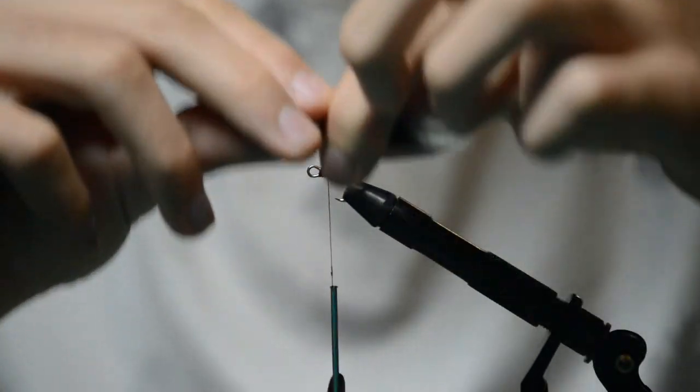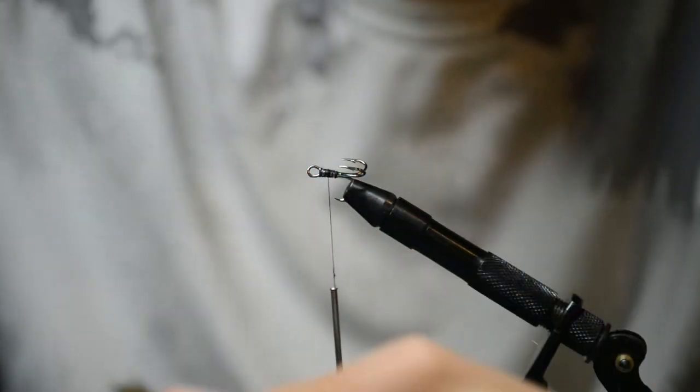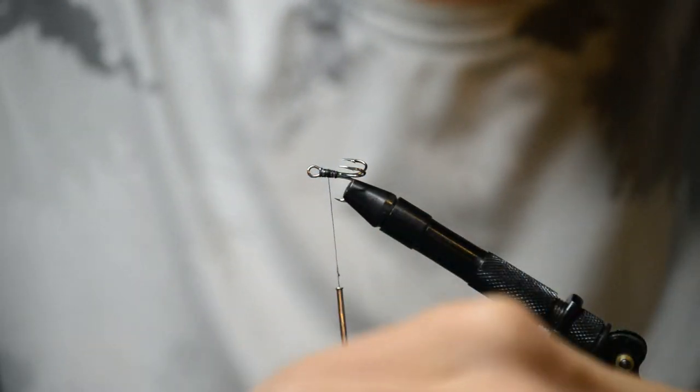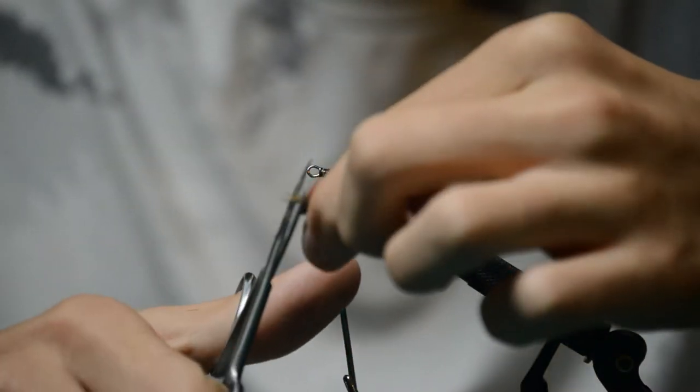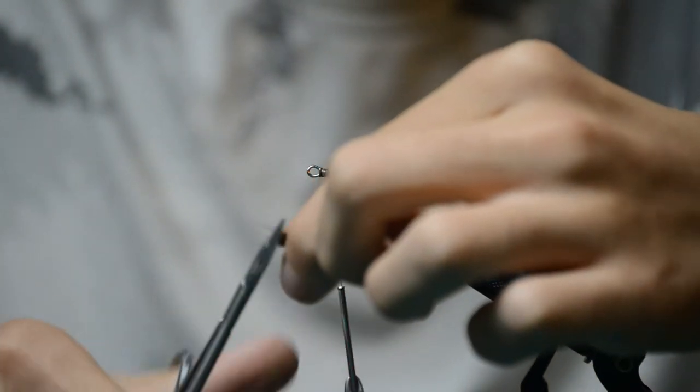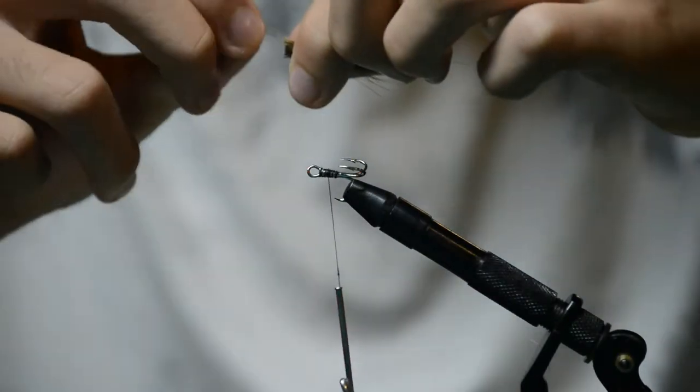So now what we'll do with this, get out all the loose stuff. Then we'll trim this up, make it all equal length. You got that all trimmed up.